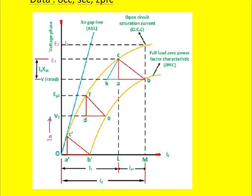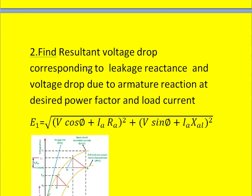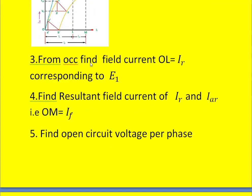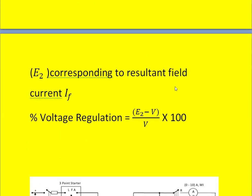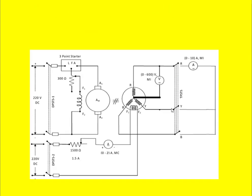Knowing E2, we can calculate the voltage regulation of the alternator as: (E2 − V) / V × 100. The experimental setup for obtaining the OCC and SC test is also shown.